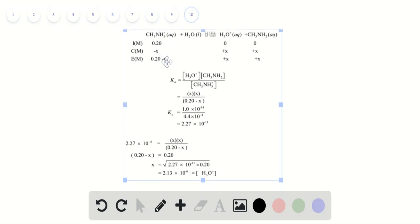Moving to the next part, we have a salt of CH3NH3I with concentration 0.20 molar. This salt is acidic in nature. We draw the ICE table and determine the equilibrium constant for acidic nature, that is KA.